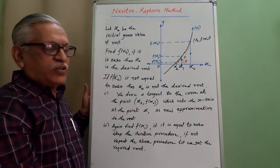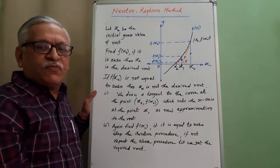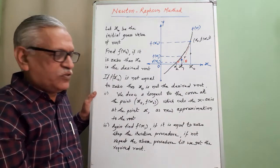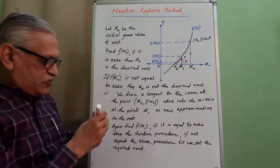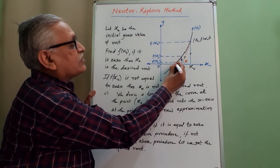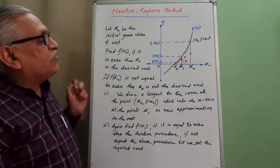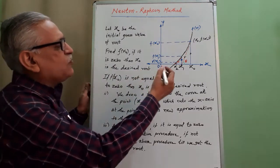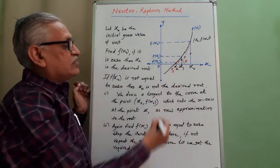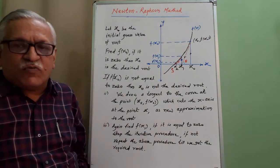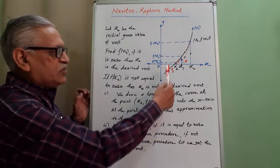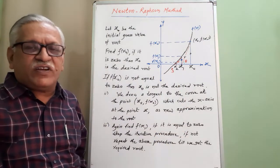We check whether x₂ is the root by finding f(x₂). If f(x₂) = 0, then x₂ is the root. If not, we repeat the procedure — draw another tangent to the curve at that point, which meets a new point x₃. Find f(x₃): if it equals 0, stop; if not, repeat the same steps once again. That is why it is called an iterative procedure.